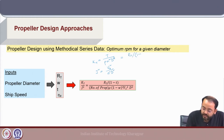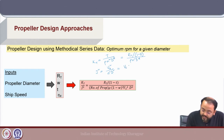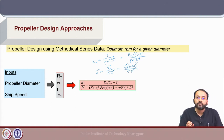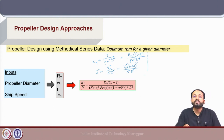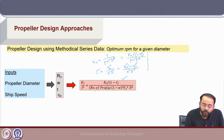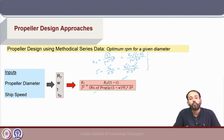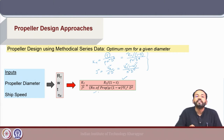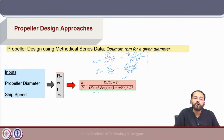Kt can be expressed using thrust T, where T equals resistance divided by (1 minus thrust deduction), and Va equals Vs times (1 minus wake fraction). Using these two expressions we get an expression for Kt/J². The number of propellers appears because the thrust is for one propeller but resistance is total for the ship, so it must be divided by the number of propellers to find Kt/J² for a single propeller.